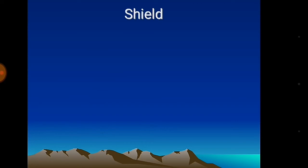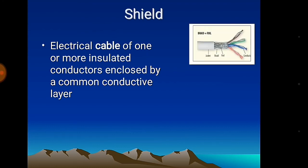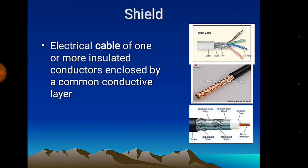After conductor and insulation, next is the shield — that is, braiding. An electric cable with one or more insulated conductors enclosed by a common conductive layer is called braided shielding. This picture shows lance cable braiding and copper braiding. There is one foil, then first braiding, then another foil, then a second braiding — four layers total — which is called quad shield.